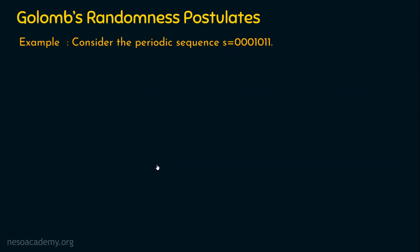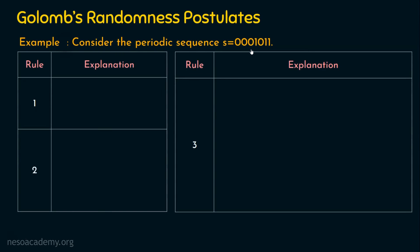The example is: consider the periodic sequence s = 0001011. Remember, this is not the full sequence — this is a period taken from a bigger sequence. We are required to find whether this binary sequence is random or not, and we will confirm this using Golomb's randomness postulates. Rule number 1 is finding the number of zeros and ones — they should differ by at most 1. In this case, there are 4 zeros and 3 ones, differing by 1. So rule number 1 is satisfied.